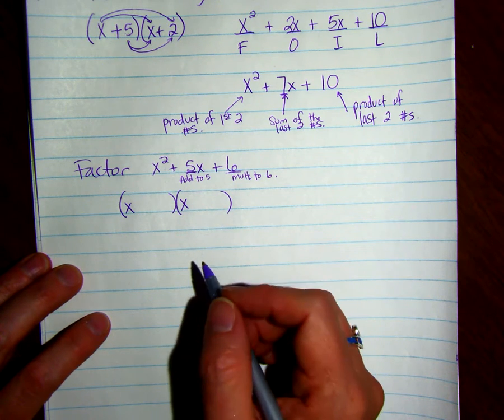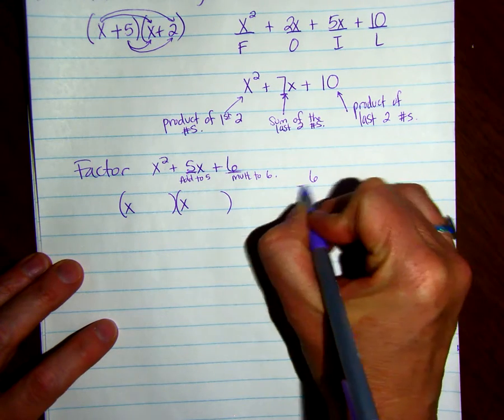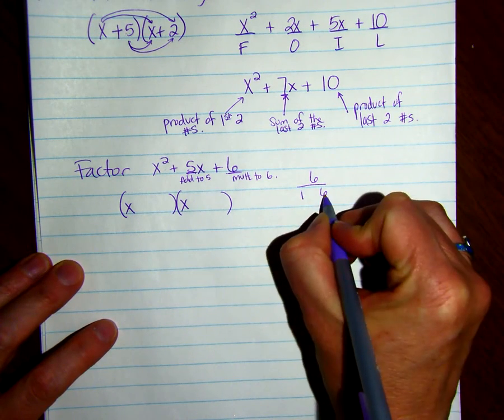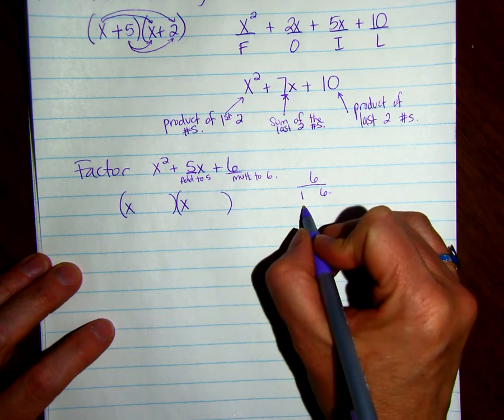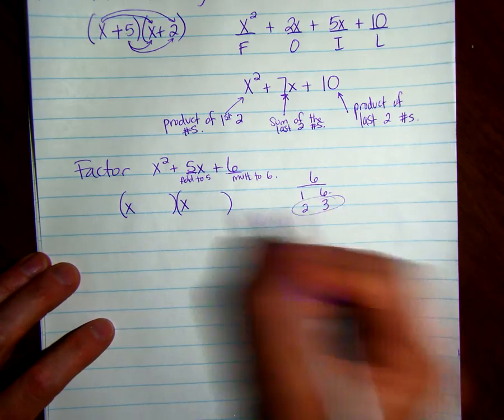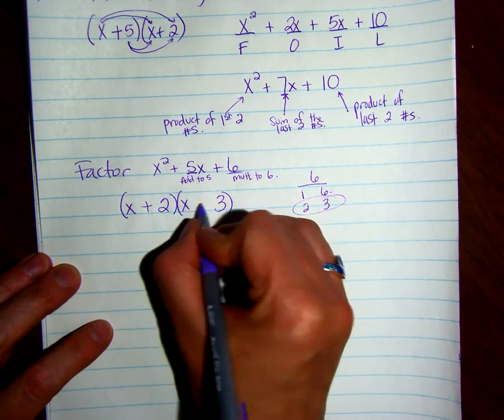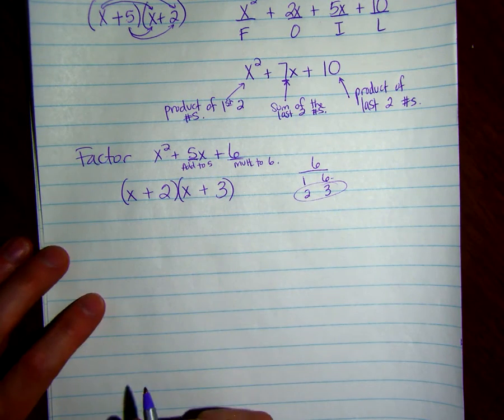So two numbers that add to 5 and multiply to 6. So let's look at numbers that multiply to 6. We have 1 and 6, but they add to 7. And 2 times 3 is 6, and they add to 5. So it's 2 and 3. And since they're all plus, we're just going to put plus signs there. So that is factored.